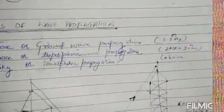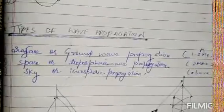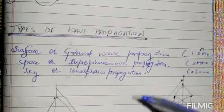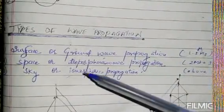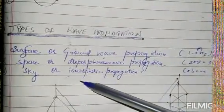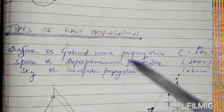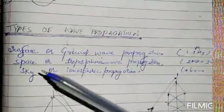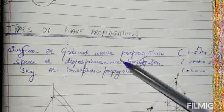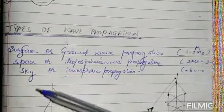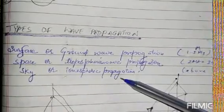Next topic is types of wave propagation. There are three types: first is surface and ground wave propagation, second is space and tropospheric wave propagation, and third is sky and ionospheric wave propagation.